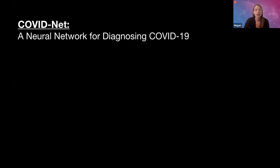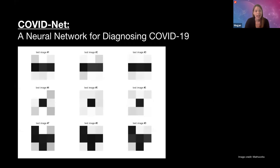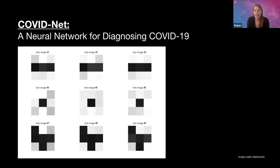Neural networks are really good at recognizing patterns, and they're actually kind of based on the neural networks in our brains. The type of neural network that COVID-Net is based on is particularly good at recognizing images and pictures, so it could work well for recognizing patterns in something like an X-ray.